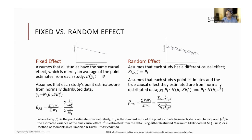The random effects meta-analysis also gives higher weight to studies with smaller standard errors, but proportionally, studies with slightly bigger standard errors get a higher weight in random effects meta-analysis compared to fixed effects. The key takeaway is that both fixed effects and random effects meta-analysis use the weighted average, and the weight assigned to each study is derived using an inverse variance method. For fixed effect, it uses only the inverse of the square of the standard error, while the random effect uses both within-study variance from the standard error and between-study variance represented by tau squared.